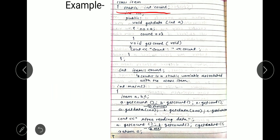Here is a program where we use the static variable. The declaration inside the class is: static integer count — starting with the static keyword, then the data type integer, and the variable name count. At this position we only declare the variable. To allocate memory space for that variable we use the syntax: data type, then class name, double colon, and the static variable name. At this location the memory space is allocated to the count variable.